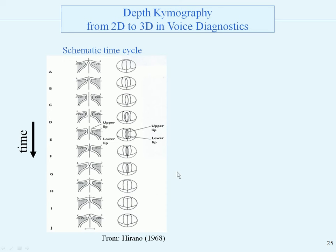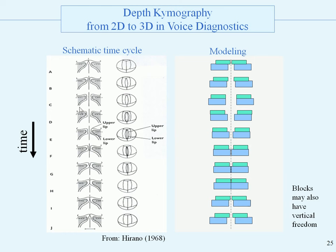This is a modeling of the vocal folds. Here is the picture we saw before with the upper lip and the lower lip, with the solid tissue and the mucosal part of the tissue. Here you can see it from the top — opening and closing. This is the opening and closing of the modeling with the different blocks. Of course, here only the horizontal motion is shown, but we also have vertical freedom.